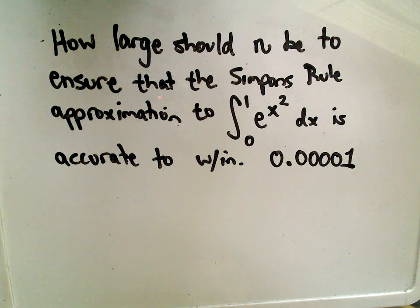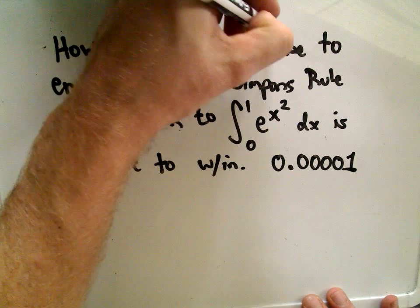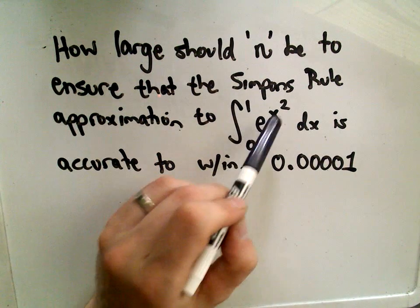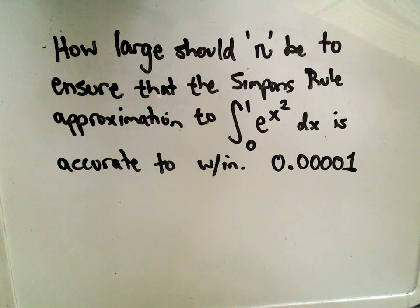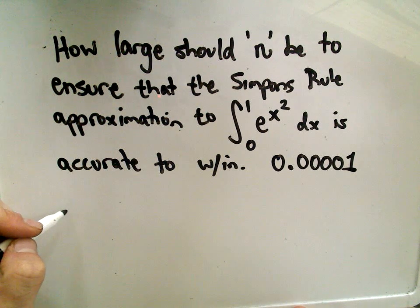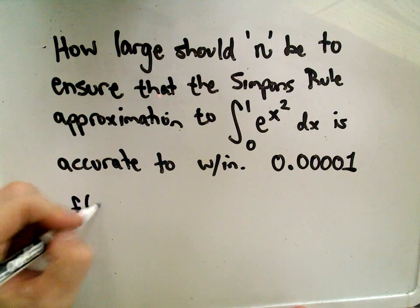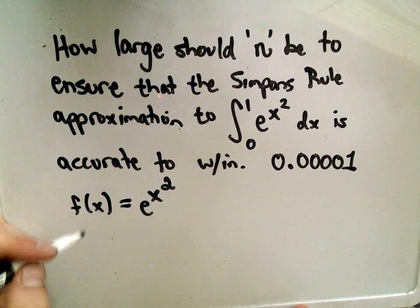So in this problem, we want to know how large should n be — how many intervals do we need to use — so that when we approximate the integral from 0 to 1 of e to the x squared, we want to make sure that's accurate to within 0.00001. The first thing we would have to do is to compute the fourth derivative of this function, e to the x squared. So this is going to be a pretty tedious little problem.